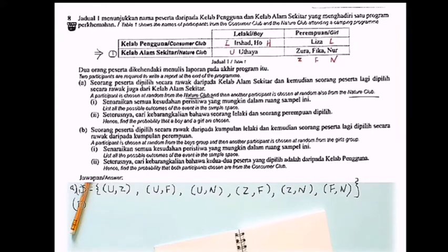Hence, find the probability that a boy and a girl are chosen. Listen, I write the possible outcomes: U-Z, U-F, U-N. Z-F is girl and girl already, I cannot list out. So only these three.